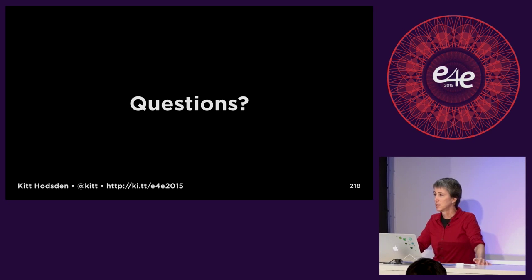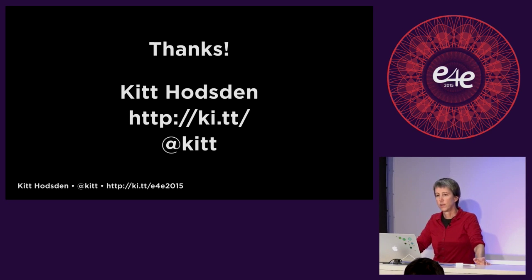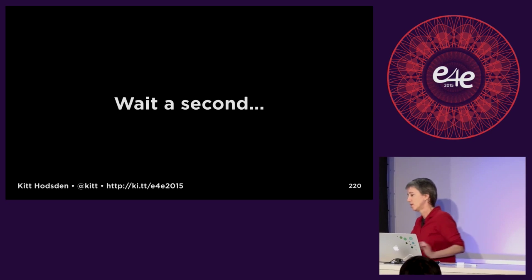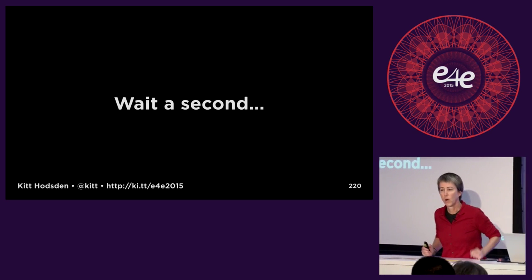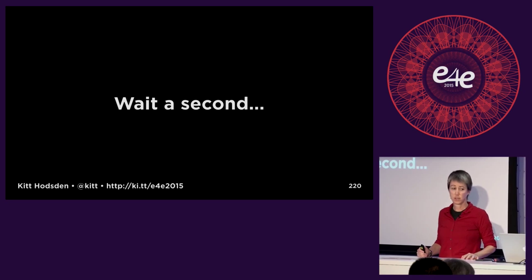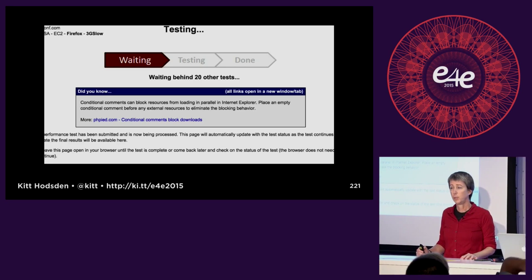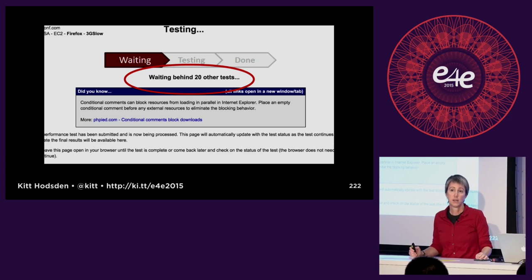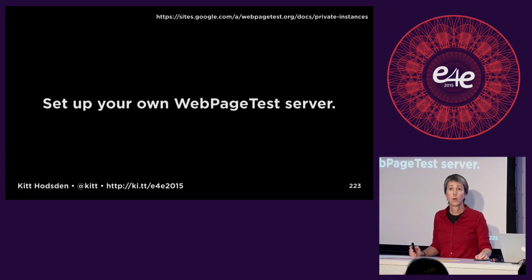I've gone 42 minutes. One of the things that is important to me is to make sure you can leave with what you need to get this going. A couple of people said, well, what about the private instance? If you have an API key and only get 200 page views, you're always waiting in the queue behind other users. Waiting in the WebPageTest public queue is kind of painful to me, so I'm a big fan of setting up my own server.